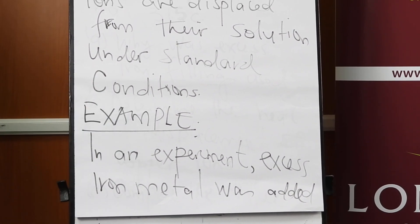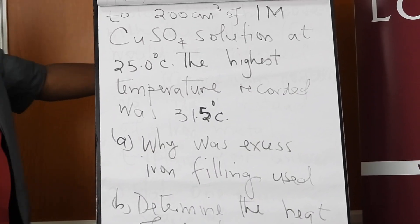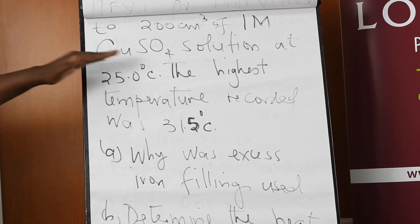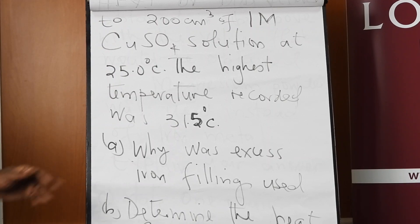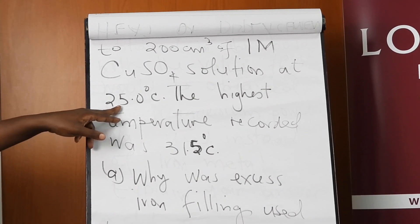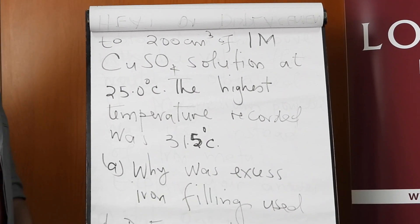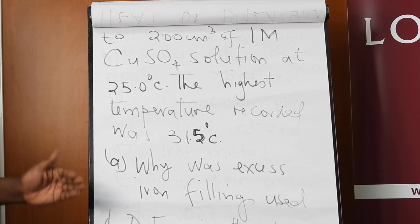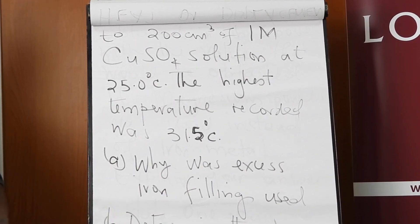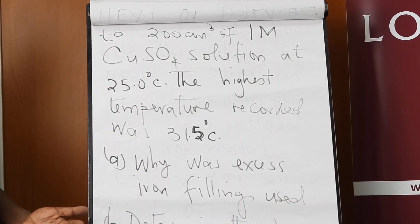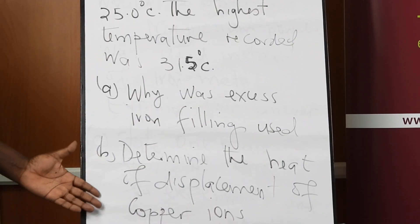To illustrate this, in the example, excess iron metal is added to 200 cm³ of one molar copper(II) sulfate solution. The initial temperature is given, and the highest temperature reached was 31.5°C. The questions ask: why was excess iron used, what is the heat of displacement, and how do we determine it experimentally?